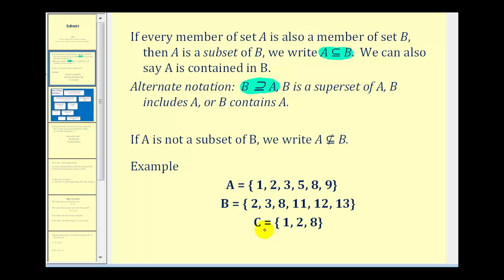notice that all of the members of set C are also members of set A. One is in both sets C and A, two is in sets C and A, and eight is in sets C and A. So we can say that C is a subset of A, or we can say A is a superset of set C.